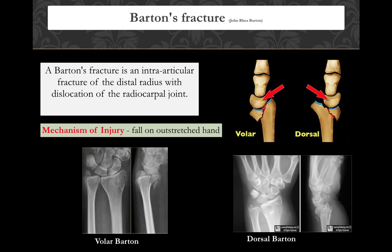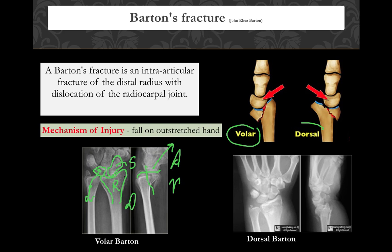Intraarticular fractures of the radius include Barton's fracture. In the lateral view, anterior is volar and opposite is dorsal. Barton's is an injury involving the joint with wrist dislocation — if the wrist goes anteriorly it's volar Barton's, if posteriorly it's dorsal Barton's. Volar or anterior Barton's dislocation is far more common. Chauffeur's fracture is a top question in image-based exams — it is an intraarticular fracture involving the radial styloid of the lower end of the radius.